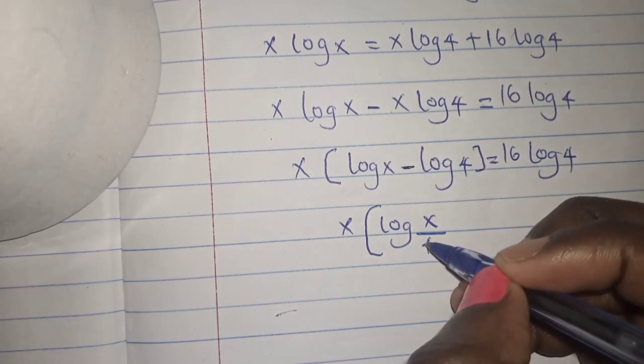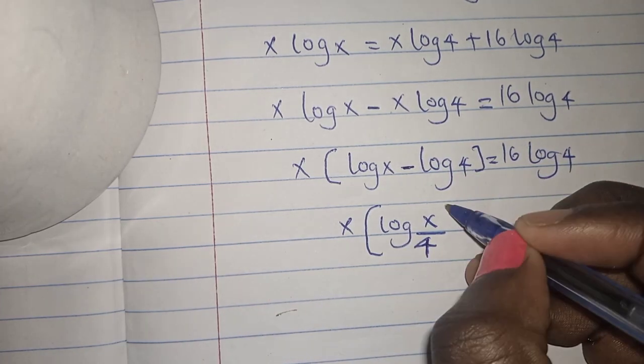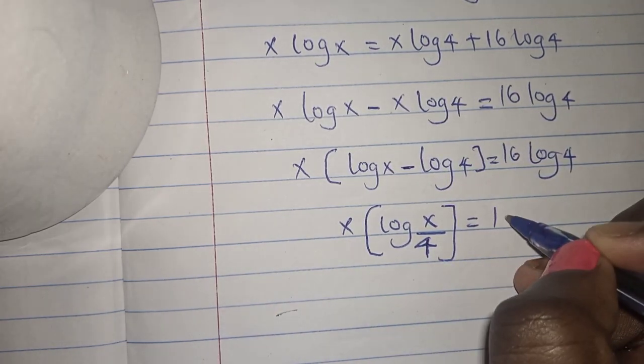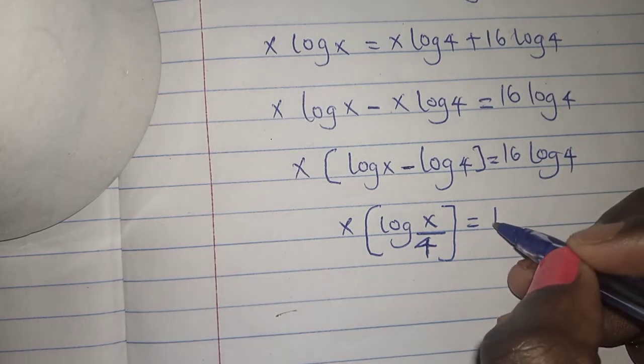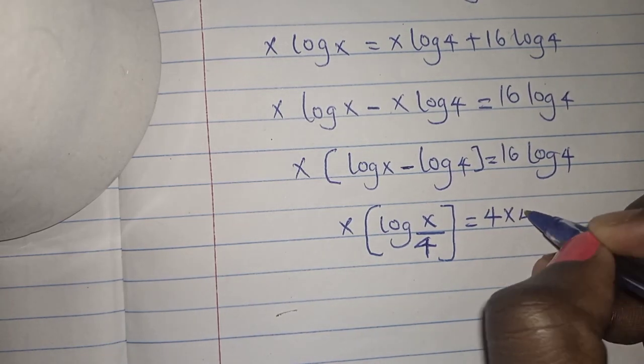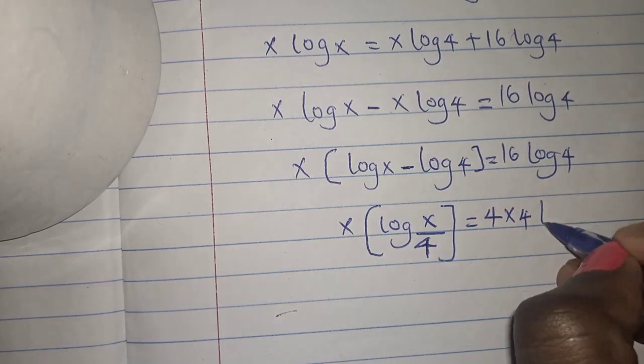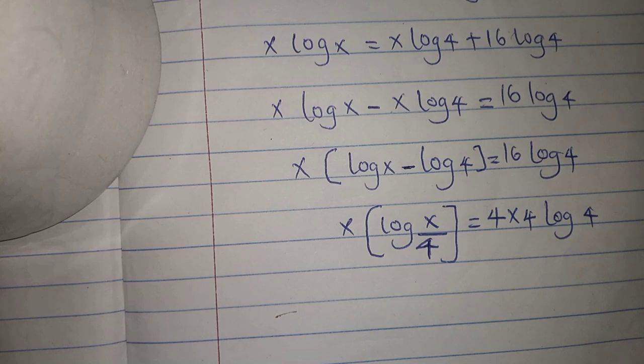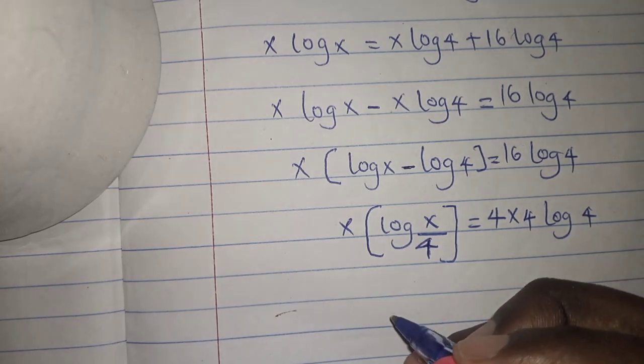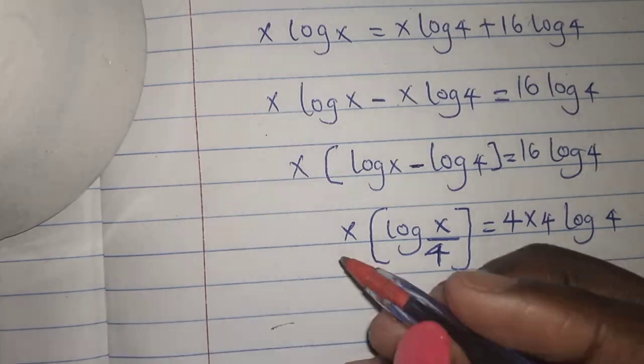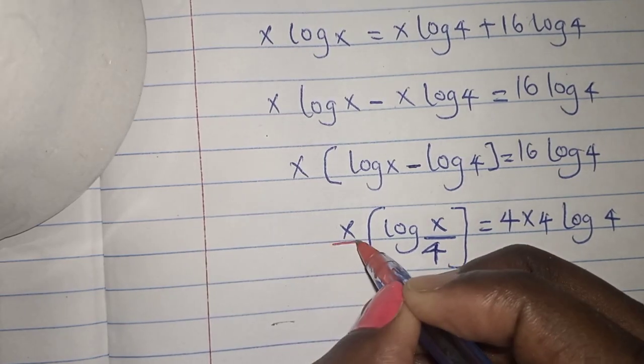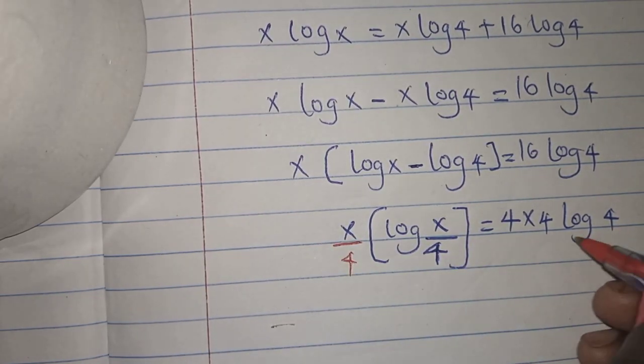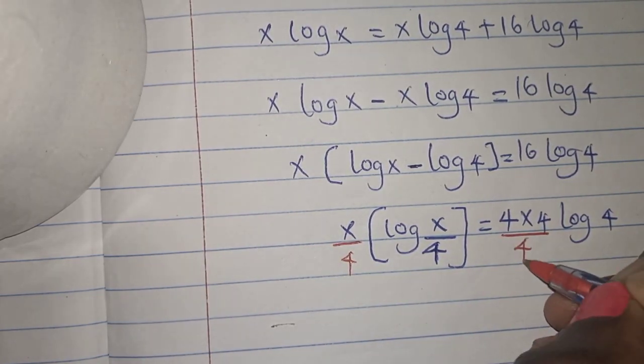When I've written this, it's just the same. This is 4. This equals to 16. And for this 16, I can write 4 times 4. 4 times 4 is 16 log 4, right? So the next step that I'm going to do, I'm going to, so I'll divide both sides by 4. I'll divide here by 4 and I'll also divide this side by 4.